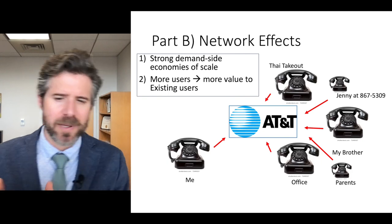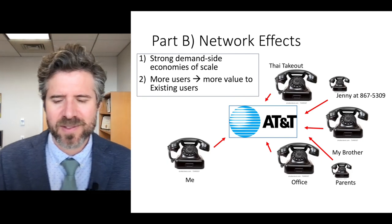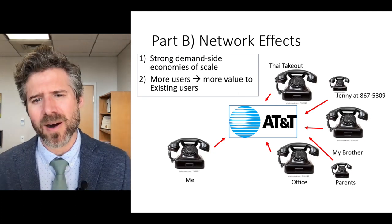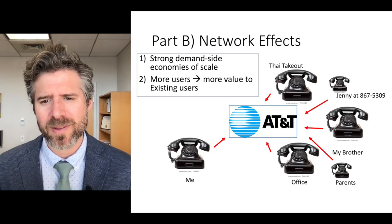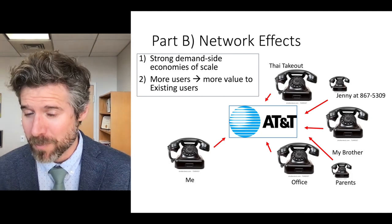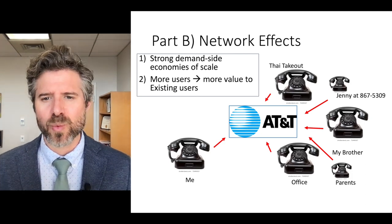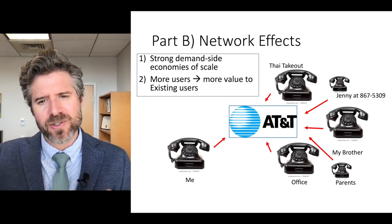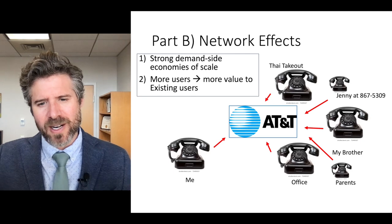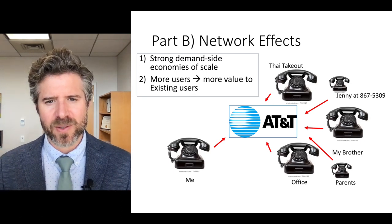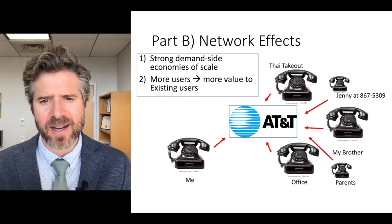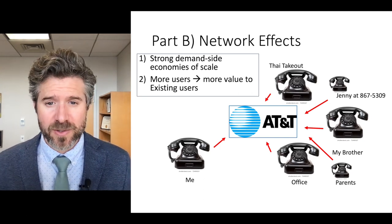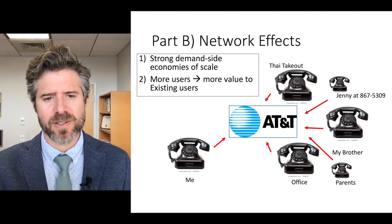I'm really happy to have the Thai food takeout on the list. But think about how happy they are to be joining a network with five people instead of a network with just one. There's an increasing amount of value for the Thai restaurant to join the more users that are already on that network. We call this strong demand-side economies of scale — more users leads to more value for existing users.